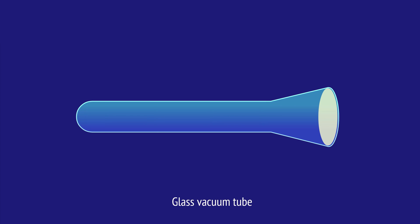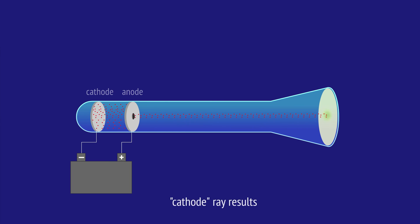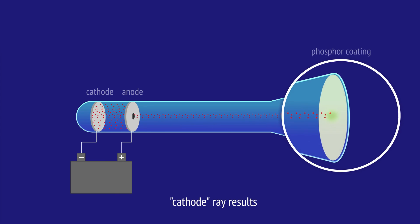A cathode ray tube is a glass vacuum-sealed tube that contained two metal electrodes with a hole in the center of the anode. When connected to a power source, a ray was emitted by the cathode towards the anode. The beam that escaped through the hole was detected by a phosphor coating at the end of the tube.